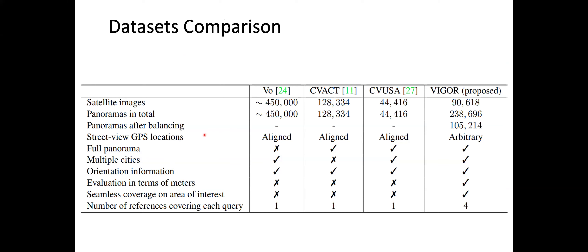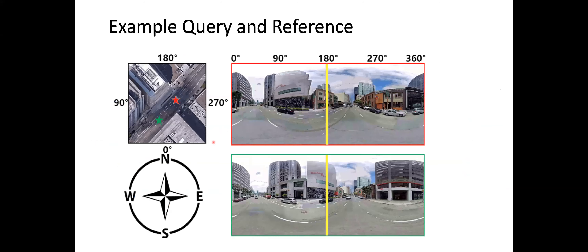This table shows a comparison with existing datasets. All datasets also provide raw GPS data for meter-level evaluation, which is the ultimate goal of localization applications, so each reference image is accompanied by a GPS tag. This slide also shows an example of two query images covered by one aerial image, where the red and green stars represent two query locations.